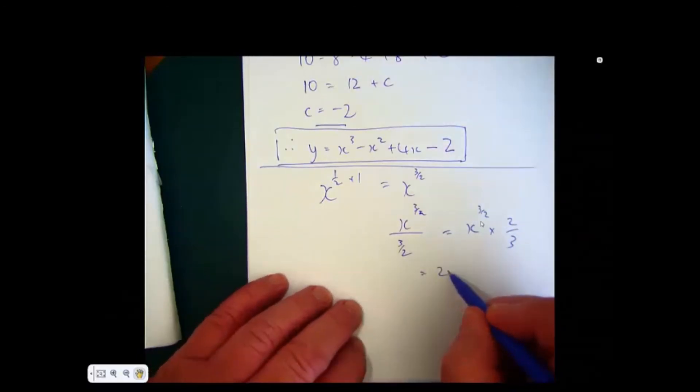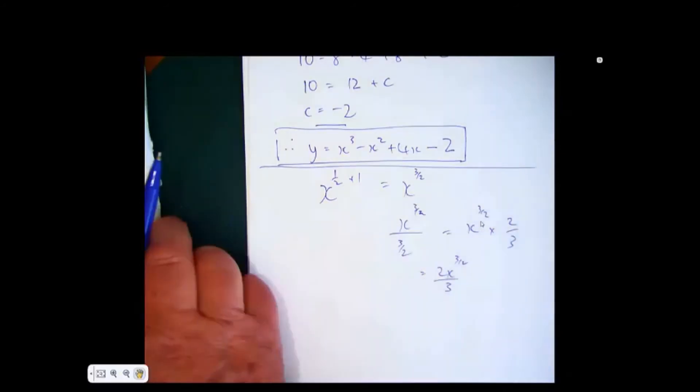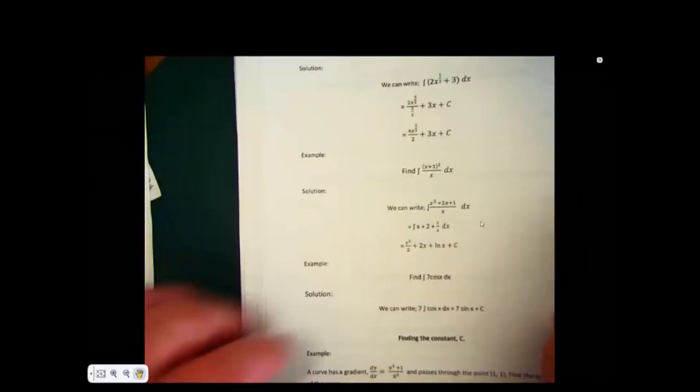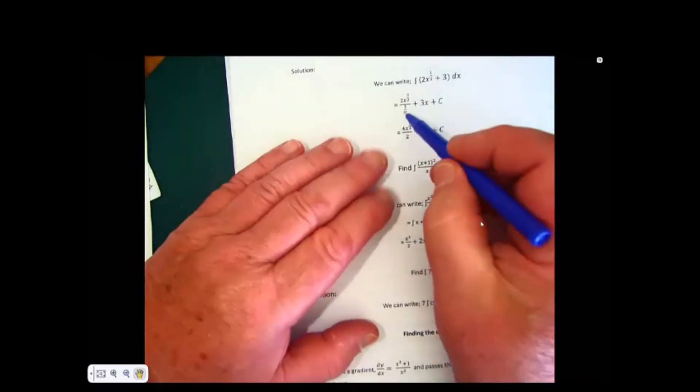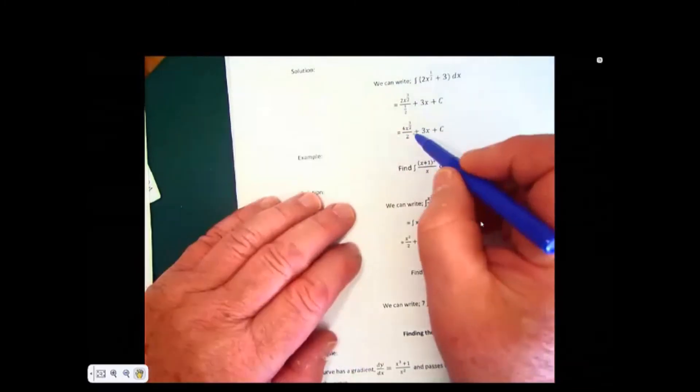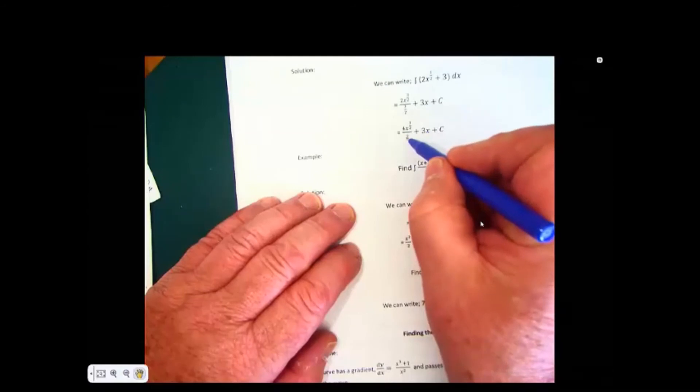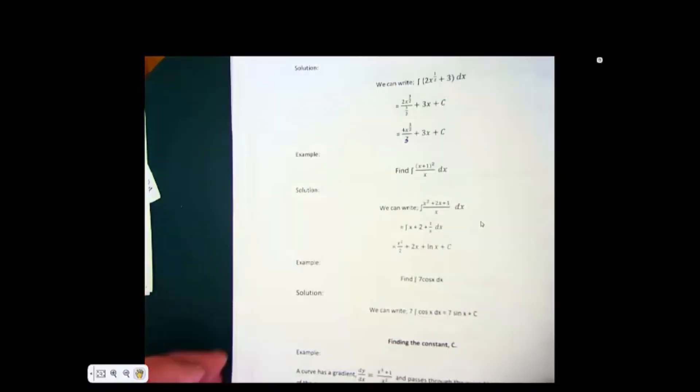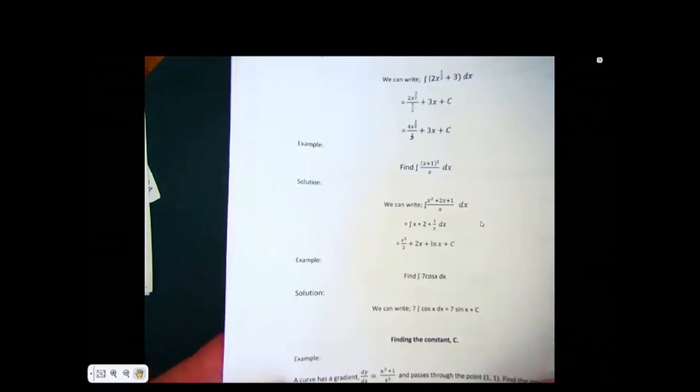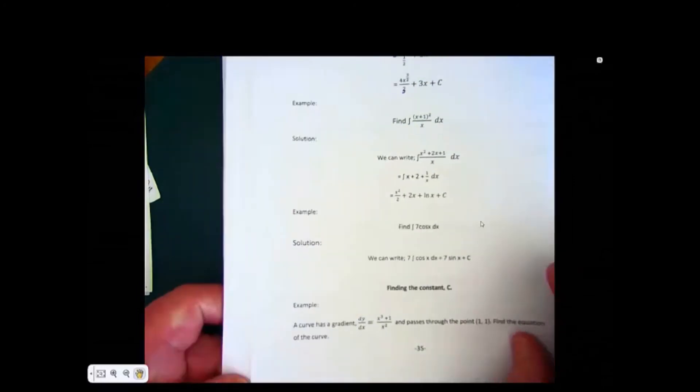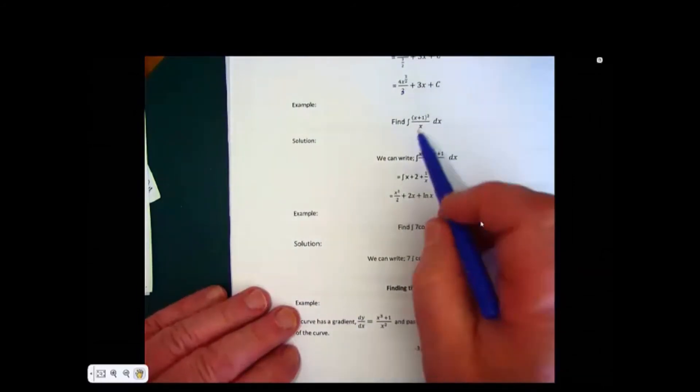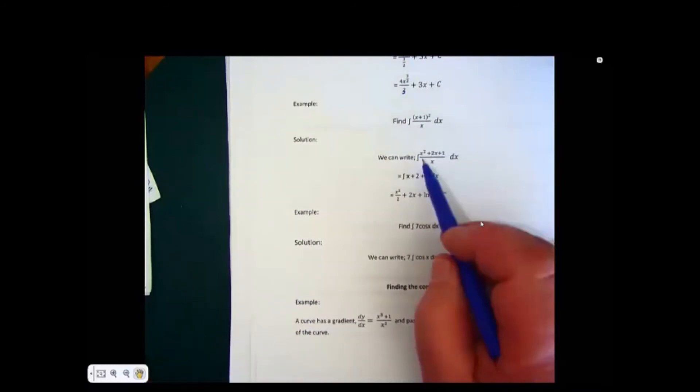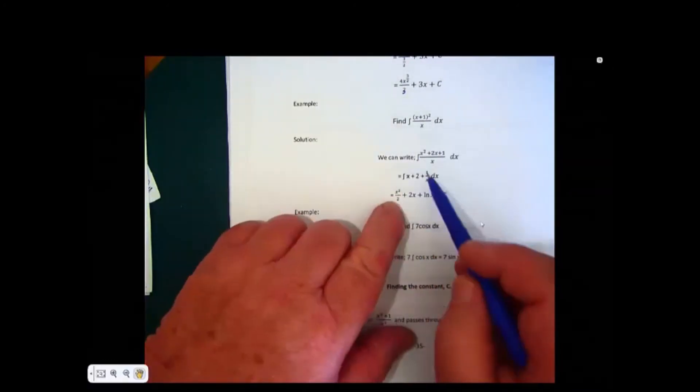I think in your book there might be a typing error there. This is divided by 3 over 2, turn it upside down, this should be 2 over 3. You can just check that yourself later on. Then, this one here, if we have x plus 1 squared, we have to expand this out, and then we can rewrite it.